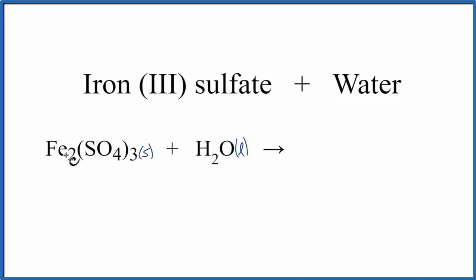When we look at this compound here, iron, that's a metal, and the sulfate ion, that's a group of nonmetals. So when we have iron, that's a metal, and then these nonmetals, that's an ionic compound.